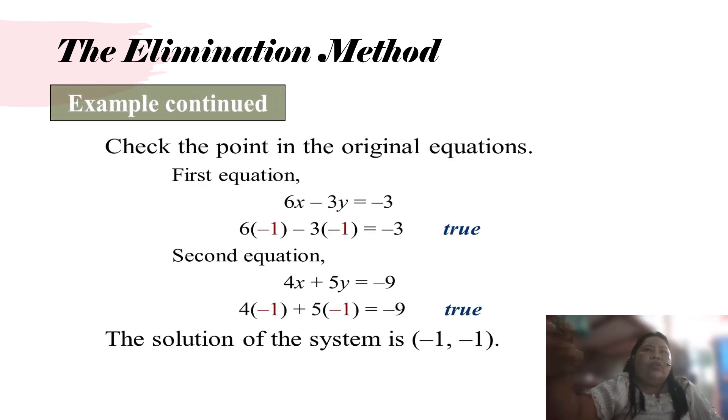To check the point in the original equations, for equation 1, we have 6 times negative 1 minus 3 times negative 1 equals negative 3. So 6 times negative 1 is negative 6, minus 3 times negative 1 is positive 3. That's why we have negative 6 plus 3 equals negative 3, which is true.